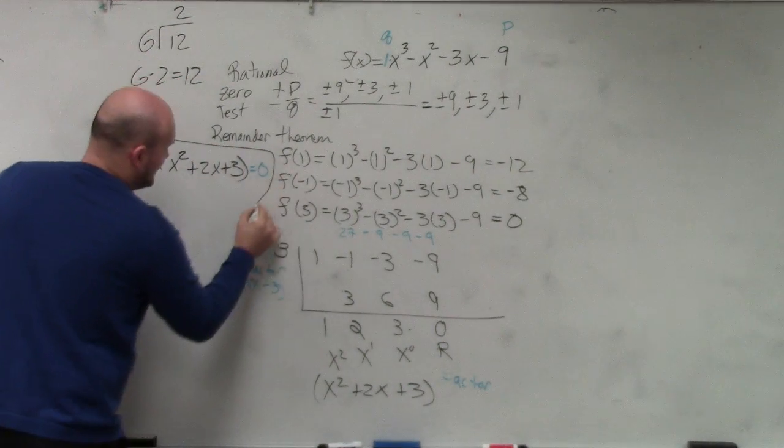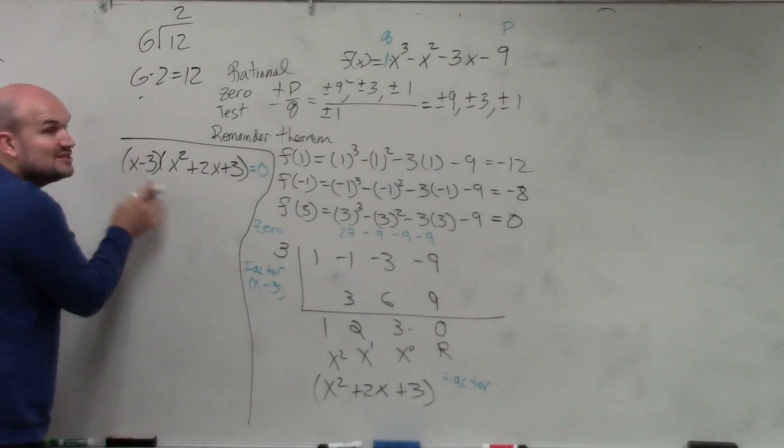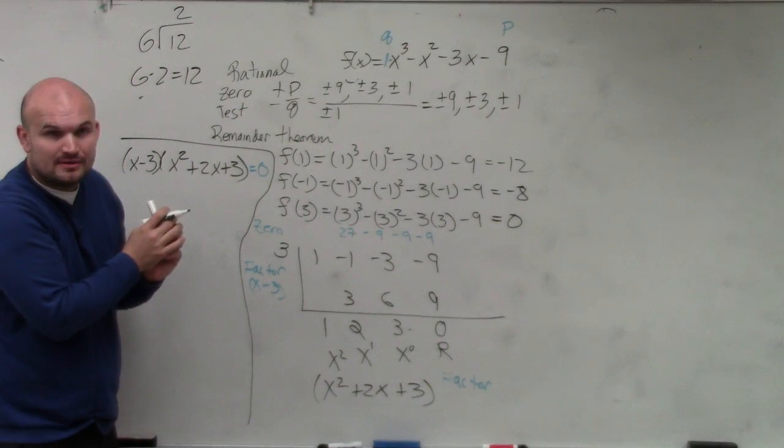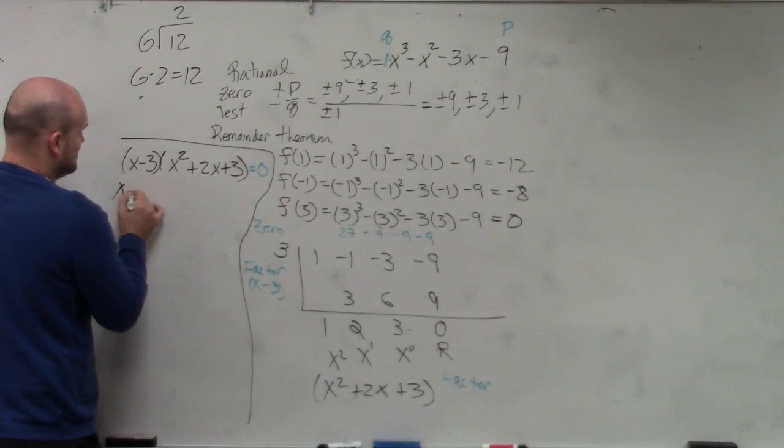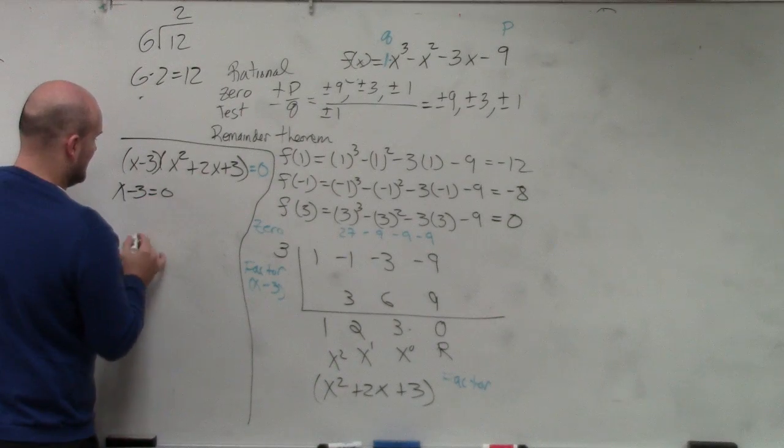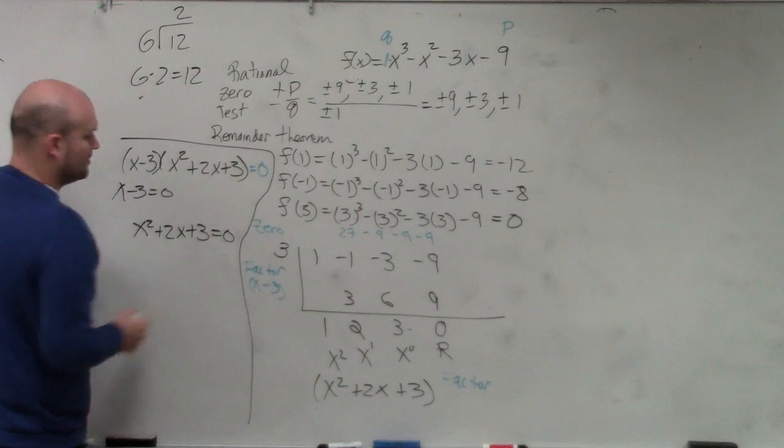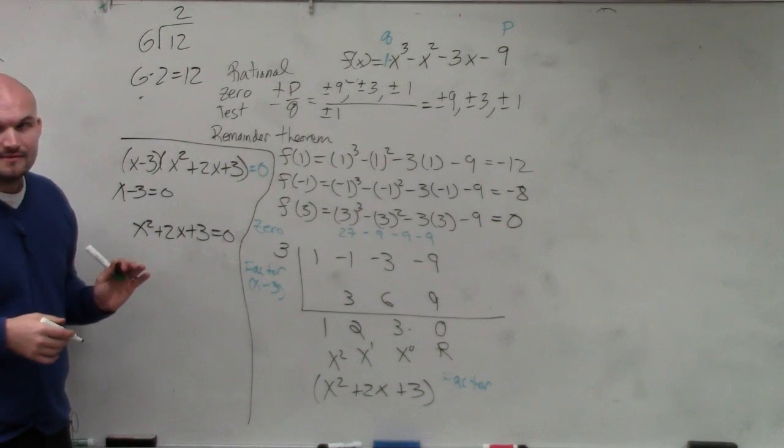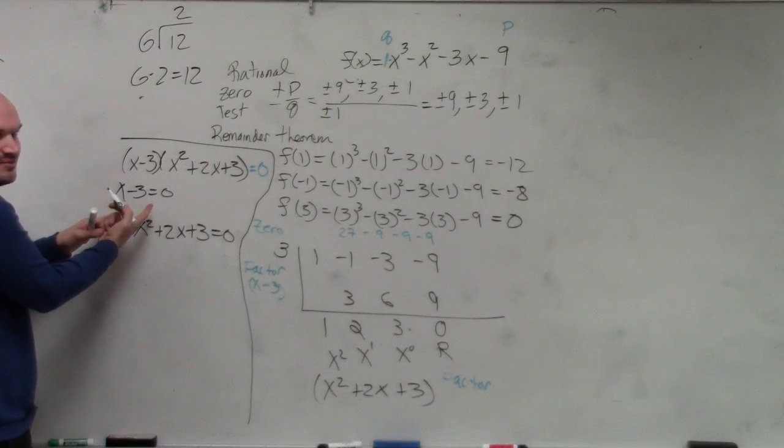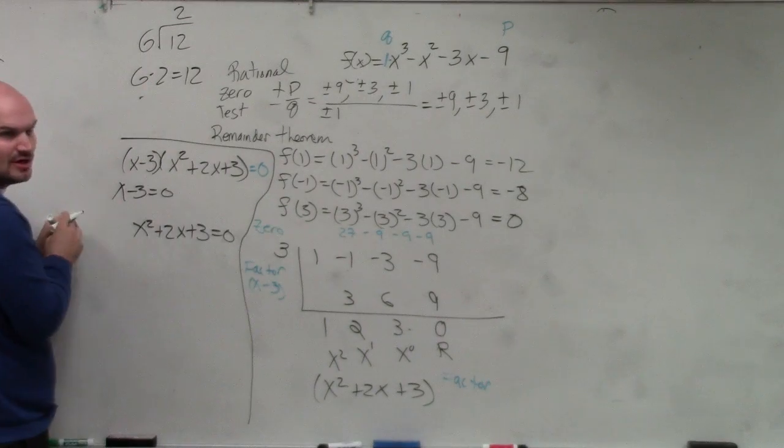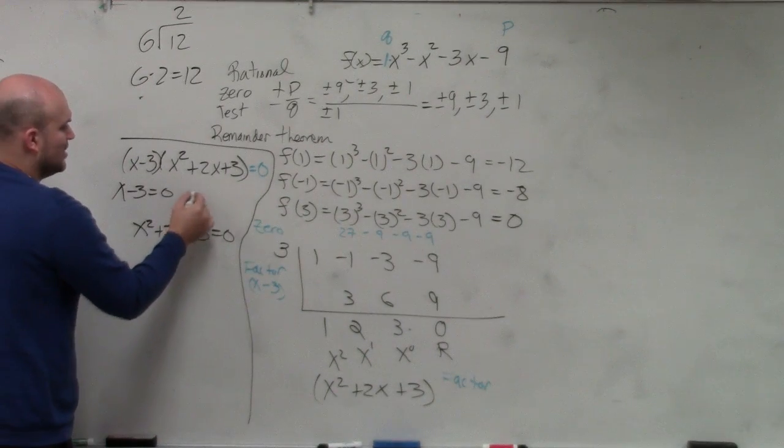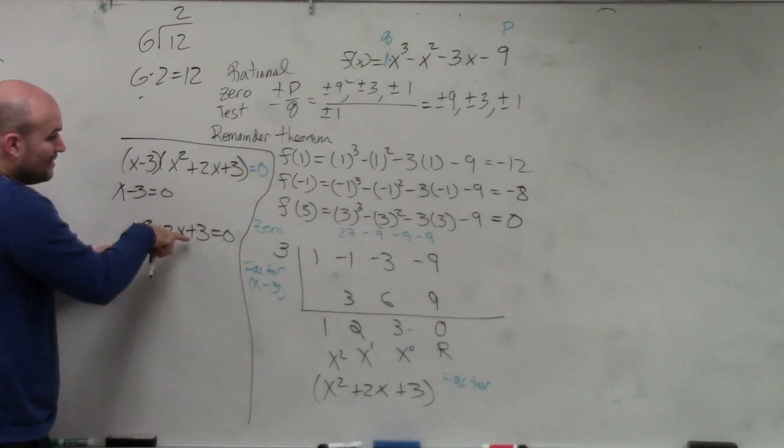So now that I've set it equal to 0, can I solve using the zero product property? Yes, I could say x minus 3 equals 0, and x squared plus 2x plus 3 equals 0. Well, I can easily solve this, right? What's the zero? We already knew that was the zero. We already know one zero is x equals 3.